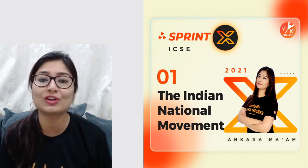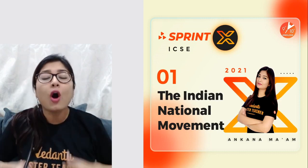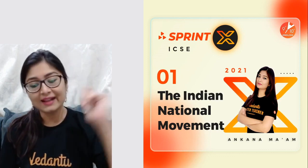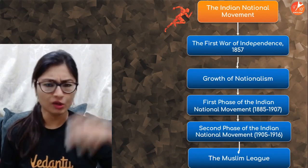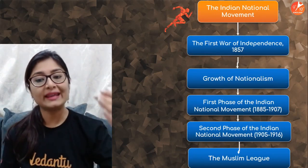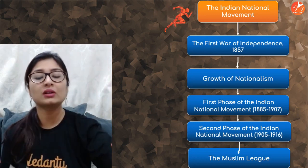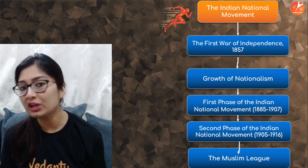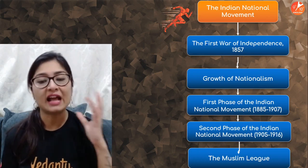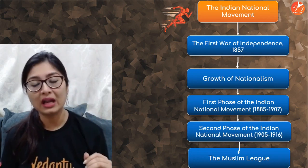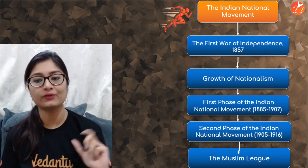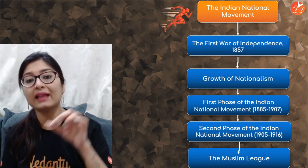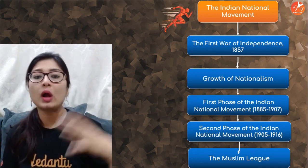With me, your master teacher for Social Sciences at Vedantu — Ankana. Hoping all my dear students are doing absolutely fine. Let's have a quick look at the flow of the sessions. For each session we will have a glance at the topics we'll be covering through different questions. Today we get started with the Indian National Movement Part 1, where we'll talk about the First War of Independence — the Revolt of 1857, growth of nationalism, the first and second phases of the Indian National Movement, and the Muslim League.